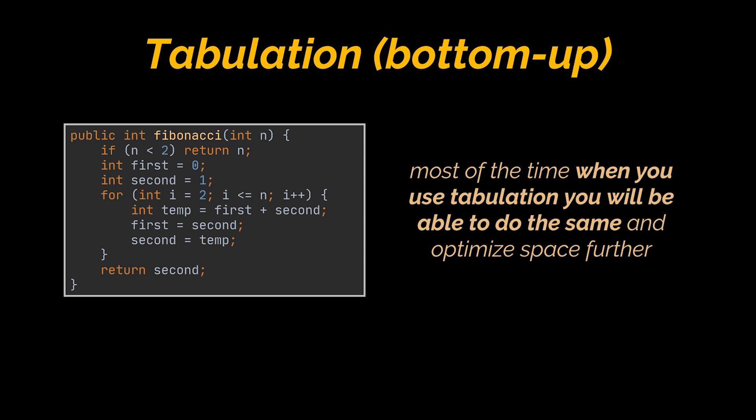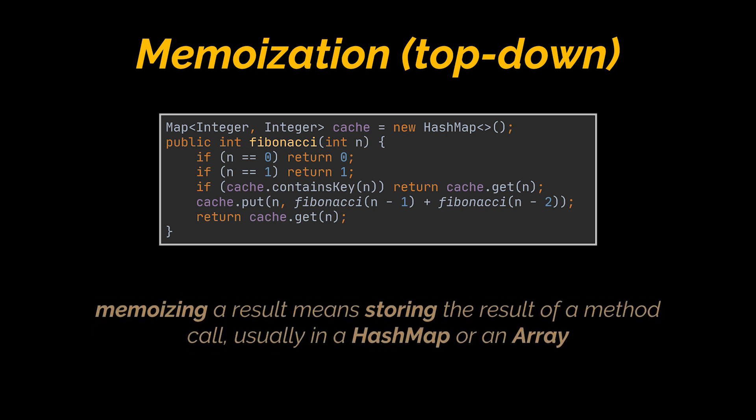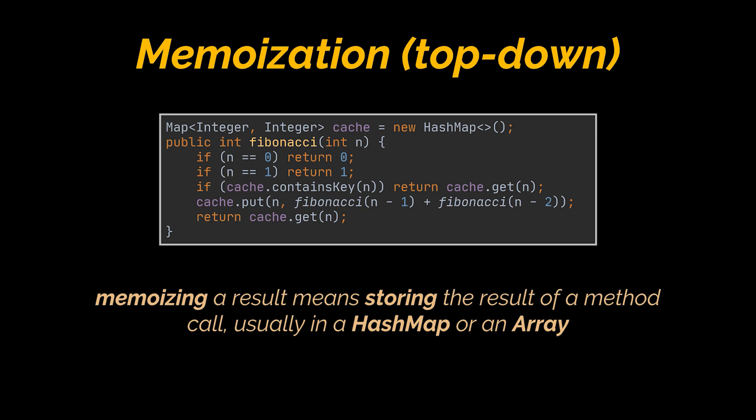We'll discuss how to approach these problems in the upcoming videos of this series. Concerning memoization, or the top-down approach, it is implemented with recursion and made efficient by keeping track of the previously calculated results in a data structure. Memoizing a result means storing the result of a method call — usually in a hash map or an array.